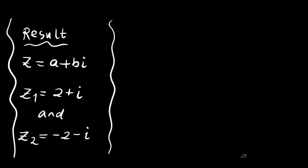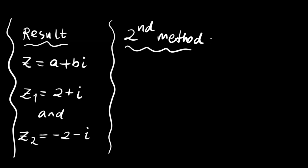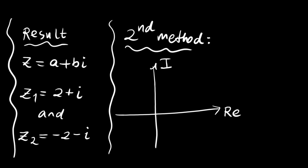Let me show you the second method — using polar coordinates. Let me show you the complex plane with the real and imaginary axes. The number 3 plus 4i is located at position 3 on the real axis and 4i on the imaginary axis, giving us our point z.